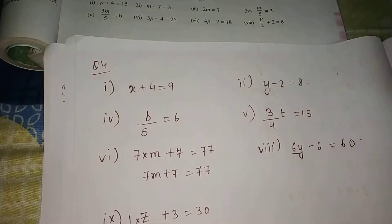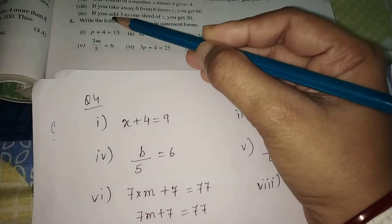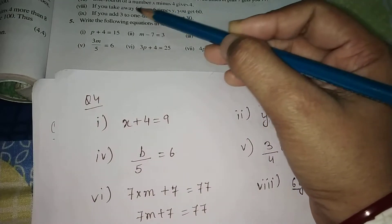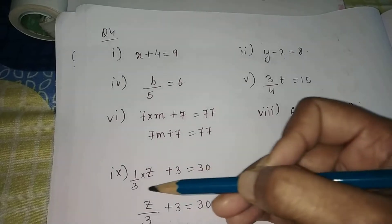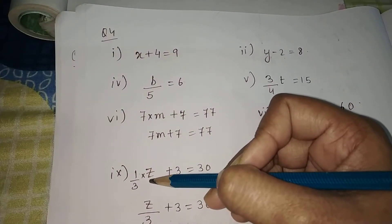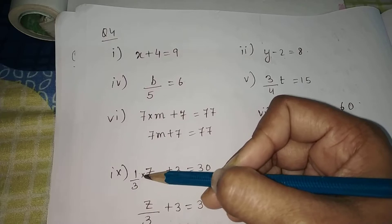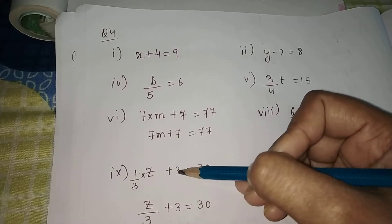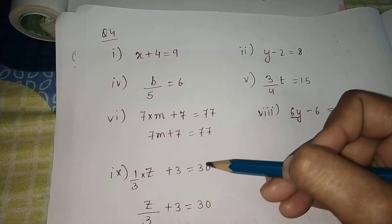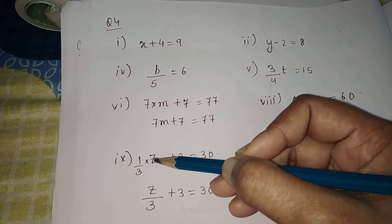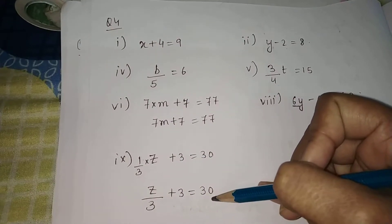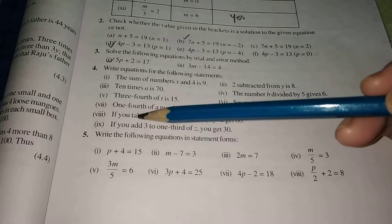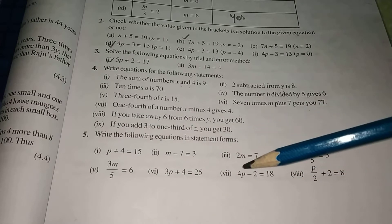Number 9: if you add 3 to one-third of z, you get 30. One-third of z means (1/3) × z. Adding 3 to that gives (1/3)z + 3 = 30, so the equation is z/3 + 3 = 30.